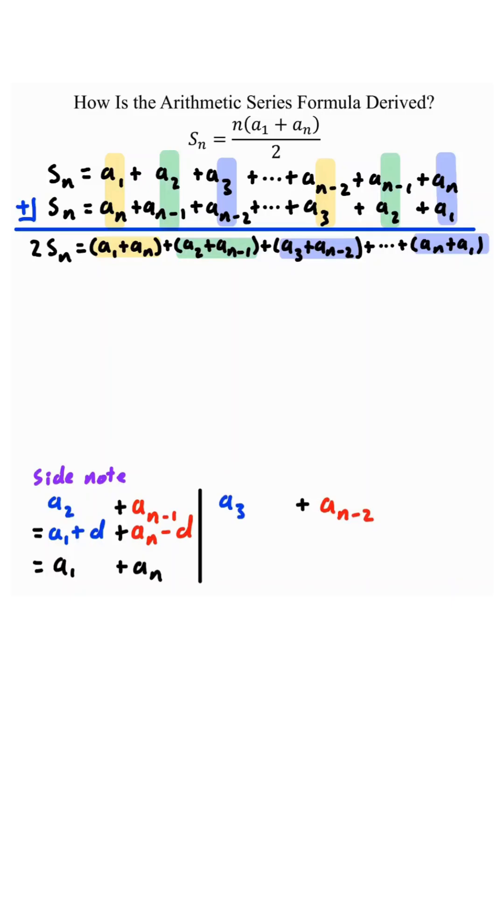Likewise, we can do the same thing for a sub 3 plus a sub n minus 2. A sub 3 is a sub 1 plus 2d, and a sub n minus 2 is a sub n minus 2d. Simplifying this we get a sub 1 plus a sub n. We can do this for every single term above.